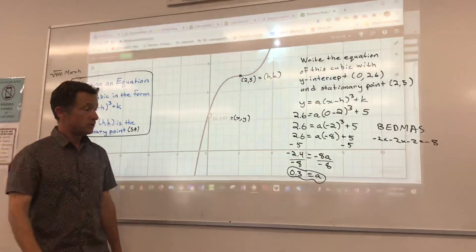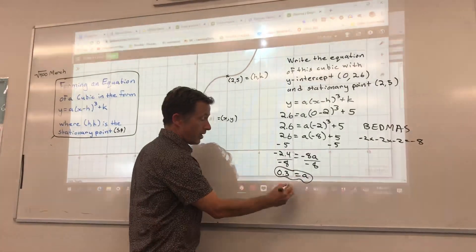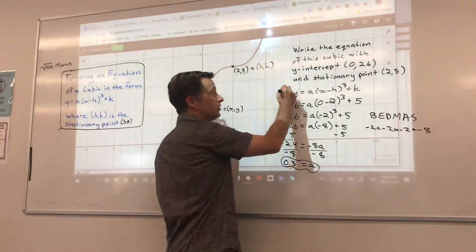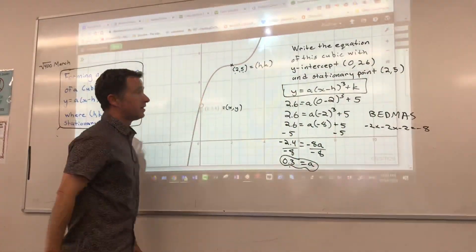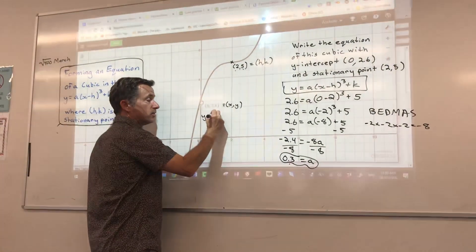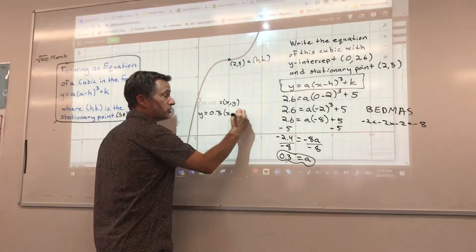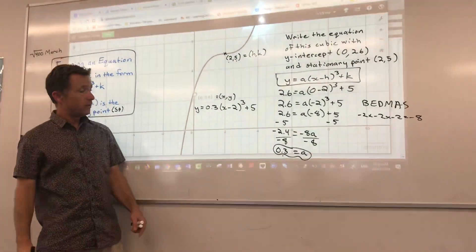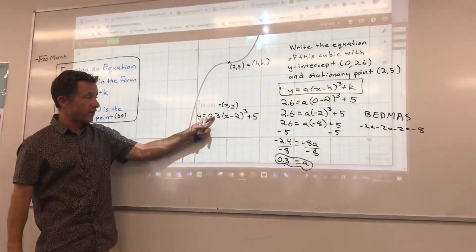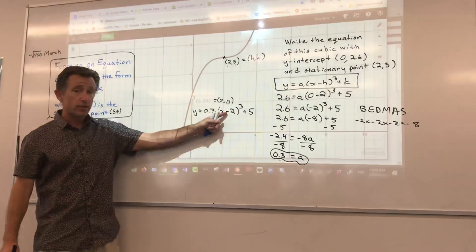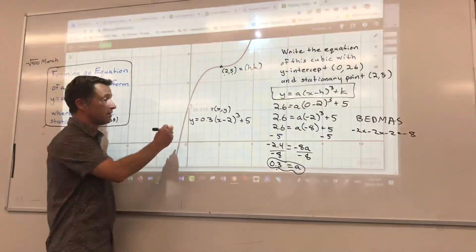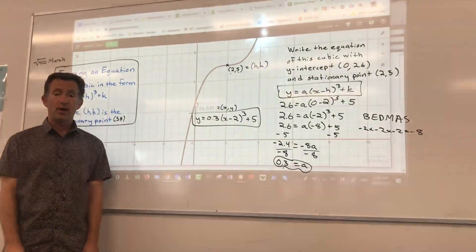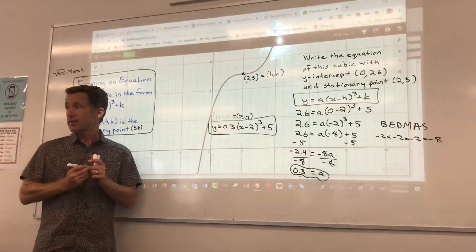And so your last step is you enter a, you enter h, and you enter k into the equation. Back into this guy. And you get y equals 0.3 x minus 2 cubed plus 5. And you go, okay, that's my scale factor. Horizontal transformation and vertical transformation. And it's very similar to what we did as a parabola, isn't it? There's not really that much difference.